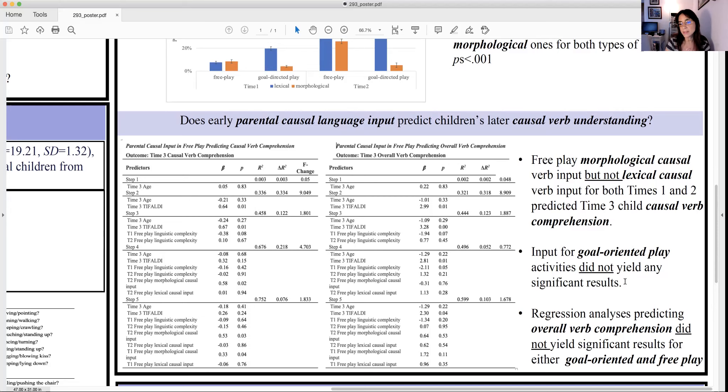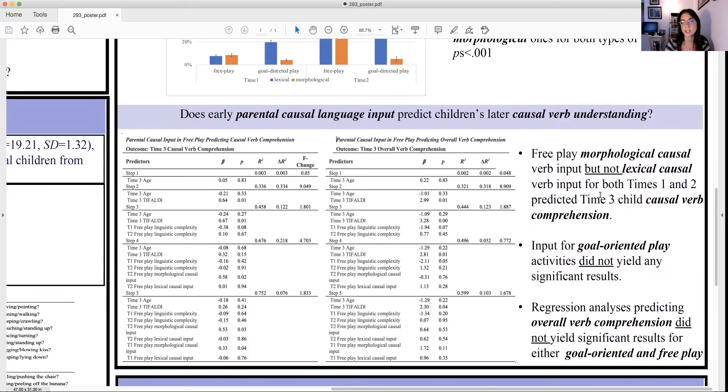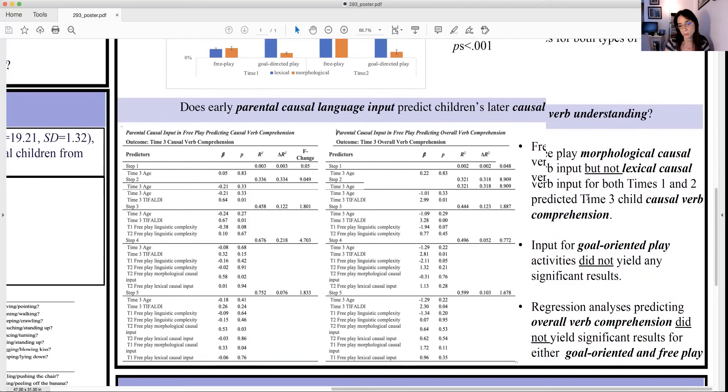For goal-oriented play, the results did not yield any significant results. The regression analysis predicting overall verb comprehension instead of causal verb comprehension did not yield significant results for either goal-oriented or free play, which indicates the specific relation between the causal input and causal verb understanding apart from total verb understanding.